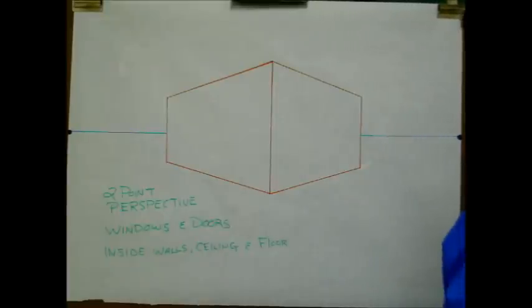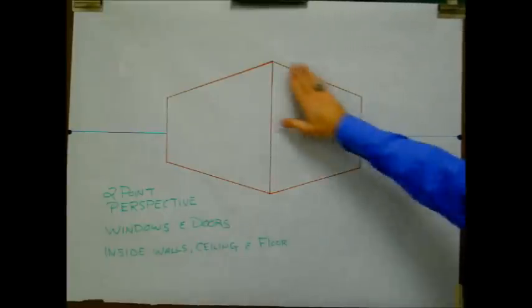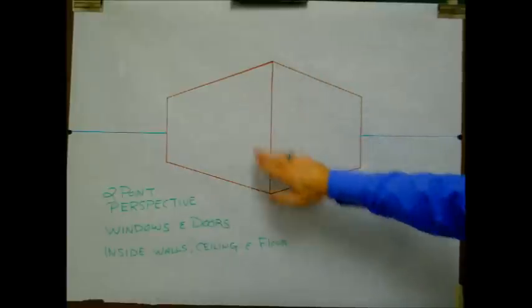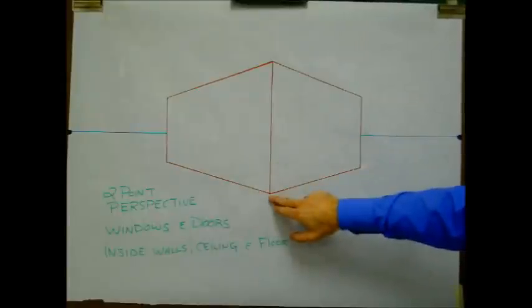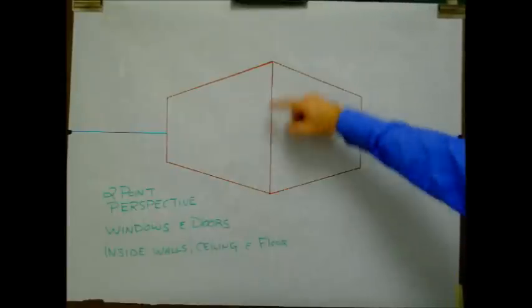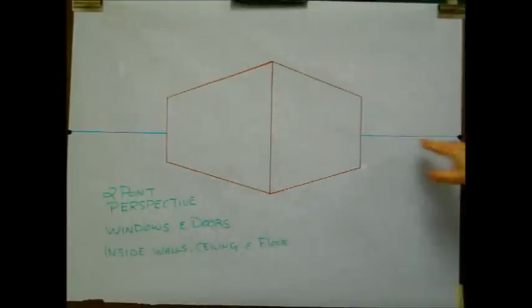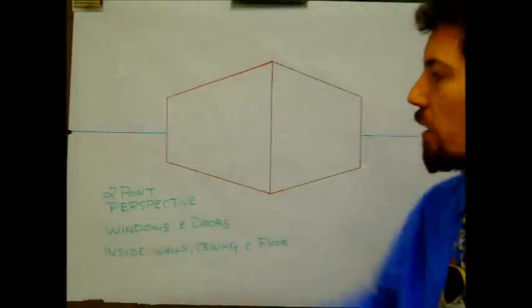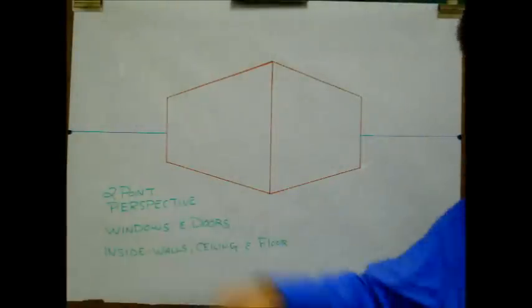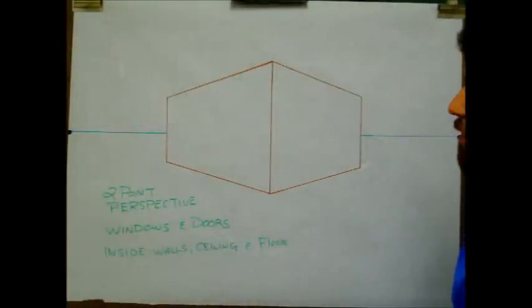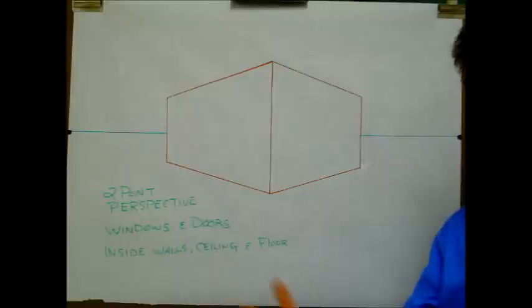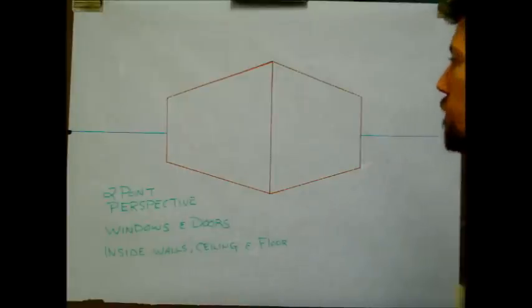Now would be a good time to pause this video, get this cube drawn out — a cube that is in the middle of the page, goes beneath and above your horizon line. Go ahead, pause that. Make sure you label it just like this. As soon as you've got that done, press pause again, and we can start.